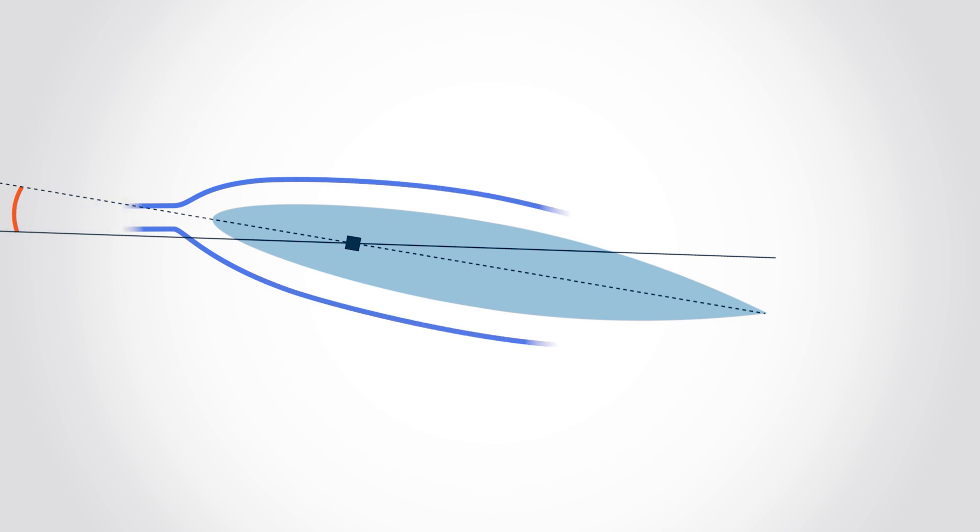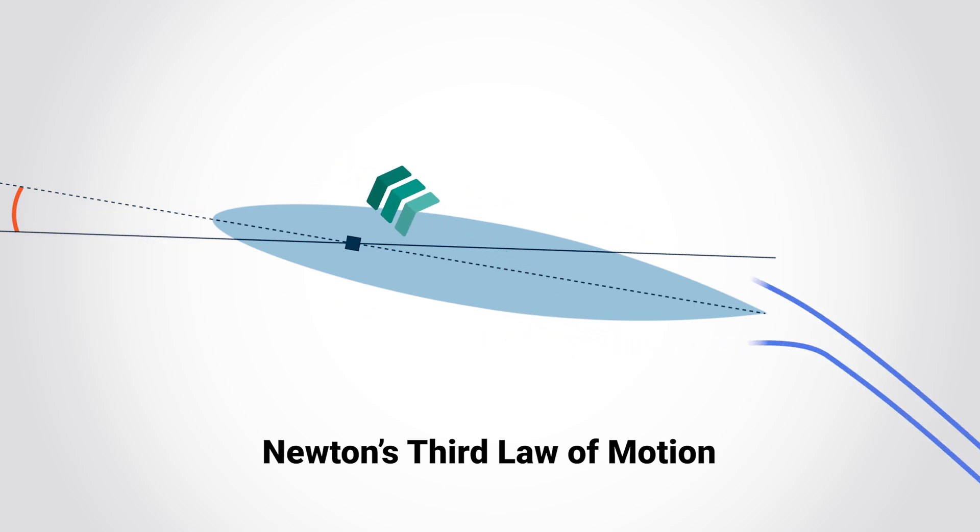After the airflow has run along the camber, it will be dumped downwards by the trailing edge. This downwards force will have an equal and opposite reaction in the opposite direction. This is Newton's third law of motion.